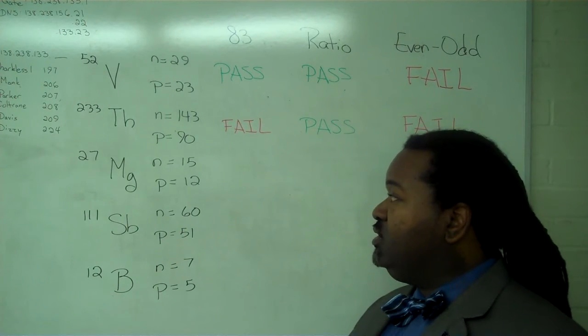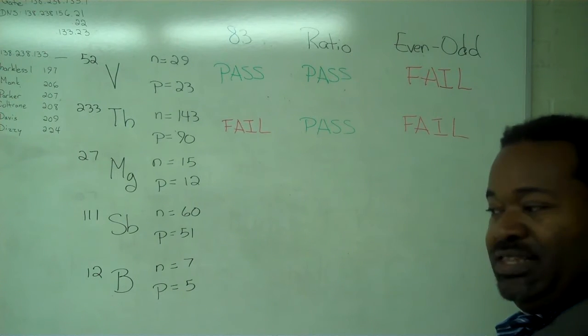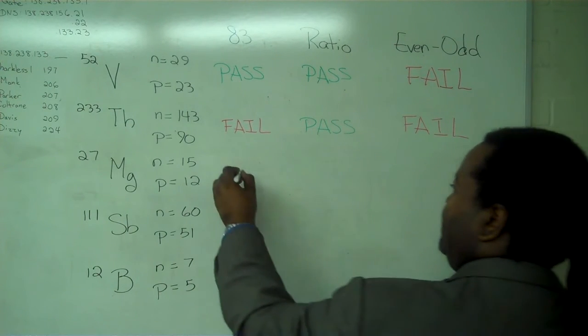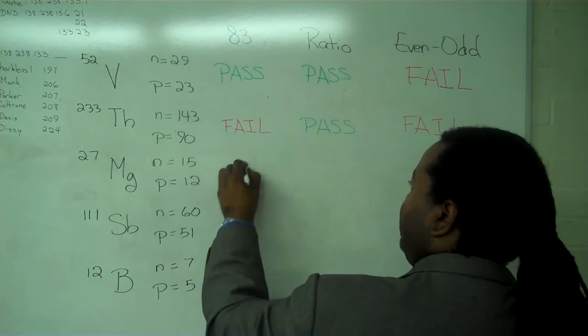Now, for magnesium, the number of protons is clearly less than 83. So this is a pass.